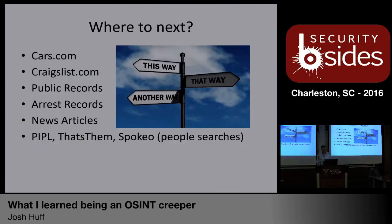Where do we go next? Check cars.com, Craigslist, public records, arrest records, news articles — anything that might give you more clues about that particular type of vehicle. Coming from Facebook, you probably know slightly about what region it came from as well. Peoplefinders.com and Spokeo are really excellent people searches that you can get decent information from before hitting their paywalls. Now, that example produced unintentional OSINT.